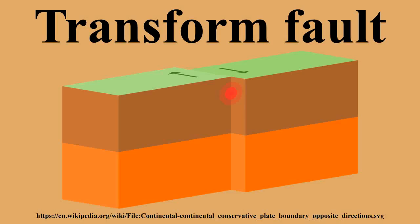In his groundbreaking work on transform fault systems, Tuzo Wilson stated that transform faults must be connected to other faults or tectonic plate boundaries on both ends. Because of that requirement, transform faults can grow in length, keep a constant length, or decrease in length. These length changes depend on which type of faults or tectonic structures connect with the transform fault. In situations where a transform fault links together a spreading center and the upper block of a subduction zone, or when two upper blocks of subduction zones link the transform fault, it will grow in length.